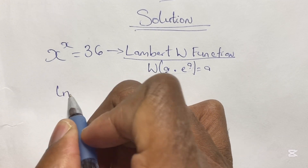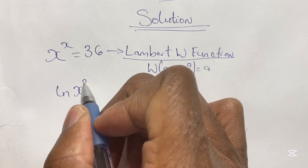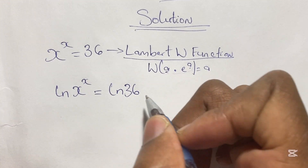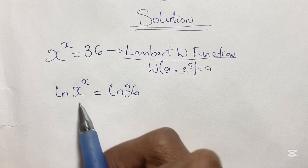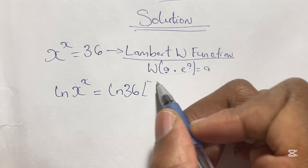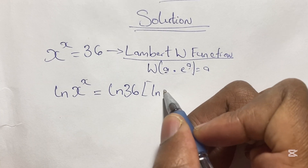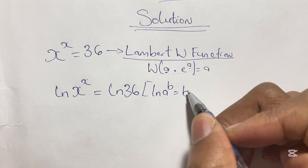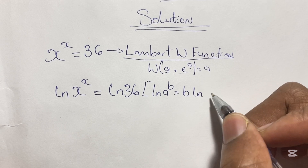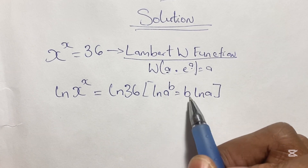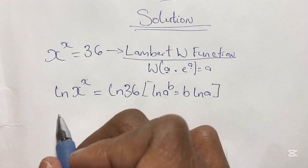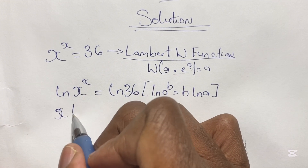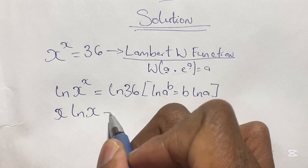Taking this equation, we start by taking the natural log of both sides. So we say that ln of x to the power of x is equal to ln 36. From here we can take ln of x to the power of x and rewrite it using the logarithm rule where ln of a to the power of b is the same as b times ln a. So then we have x ln x is equal to ln 36.